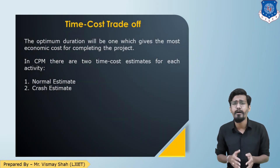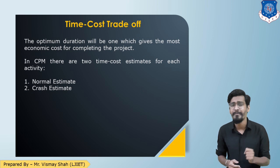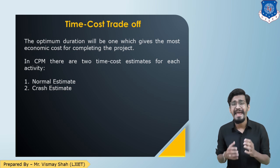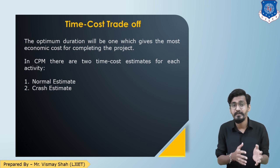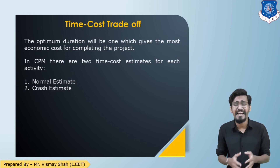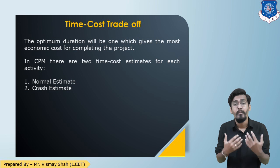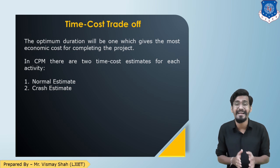There are two kinds of estimates prepared in CPM for each activity: normal estimate and crash estimate. In the normal estimate, we emphasize more on cost — completing the project with minimum cost. While in the crash estimate, we focus on time — in minimum time when we can complete the project and up to what level the cost is going to increase. That is your crash estimate.